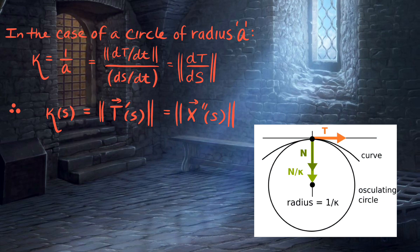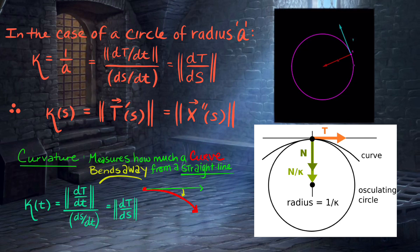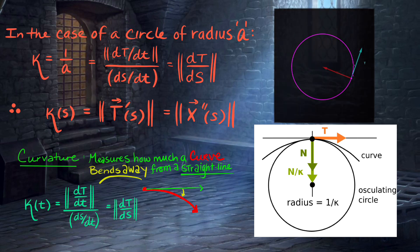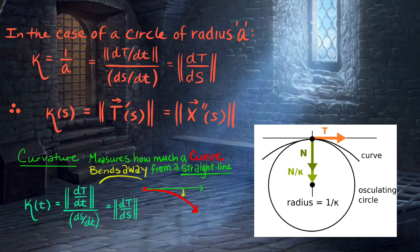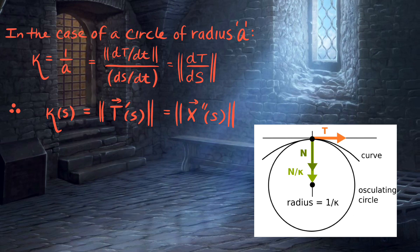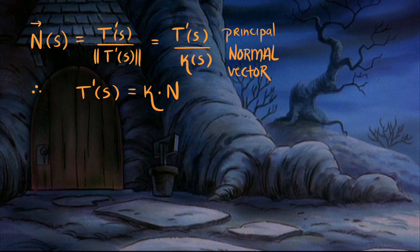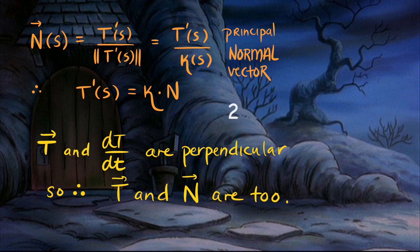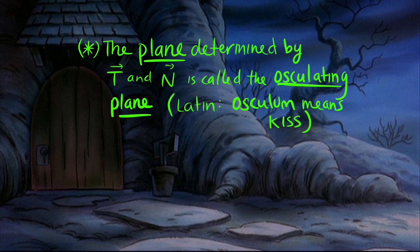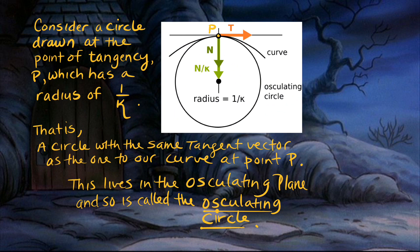For a circle of radius a, we discussed its curvature: dT/ds has length 1/a, a constant curvature, meaning a constant rate of bending away from a straight line. We define curvature as the length of the derivative of the unit tangent vector when parametrized by arc length. The principal normal vector, parametrized by arc length, is the derivative of the tangent vector, and a multiple of that unit normal vector is the curvature. The plane determined by the tangent and normal vectors is known as the osculating plane.